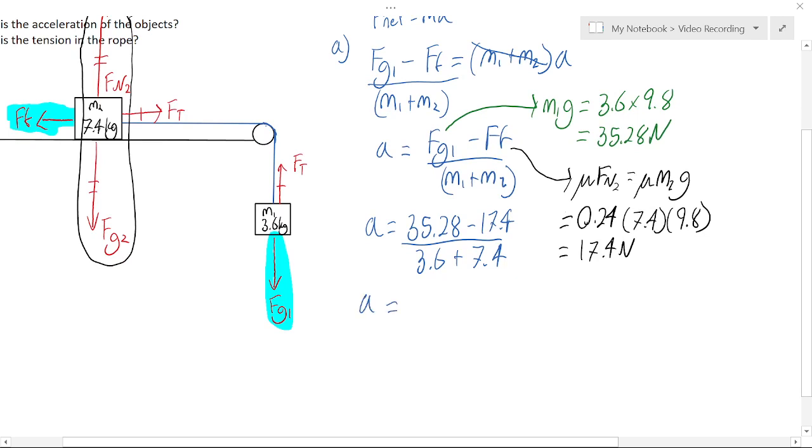Therefore, we put all that in our calculator when we find the acceleration of both the masses, because they're connected by a rope, is 1.63 meters per second squared.